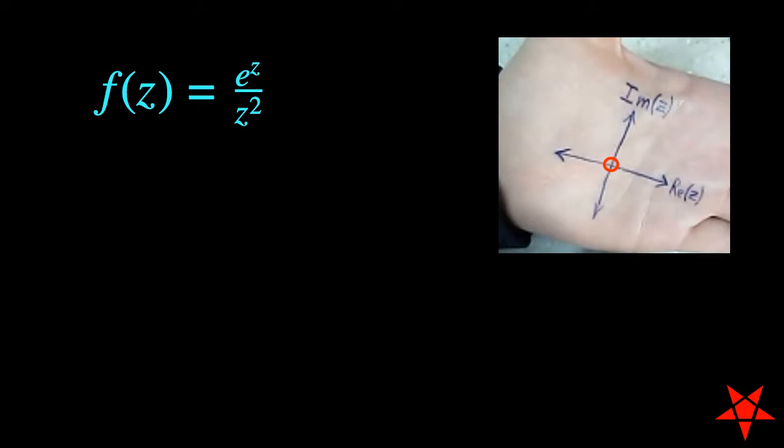So, the first thing we're going to do is to separate the numerator, e to the z, from the denominator, z squared.